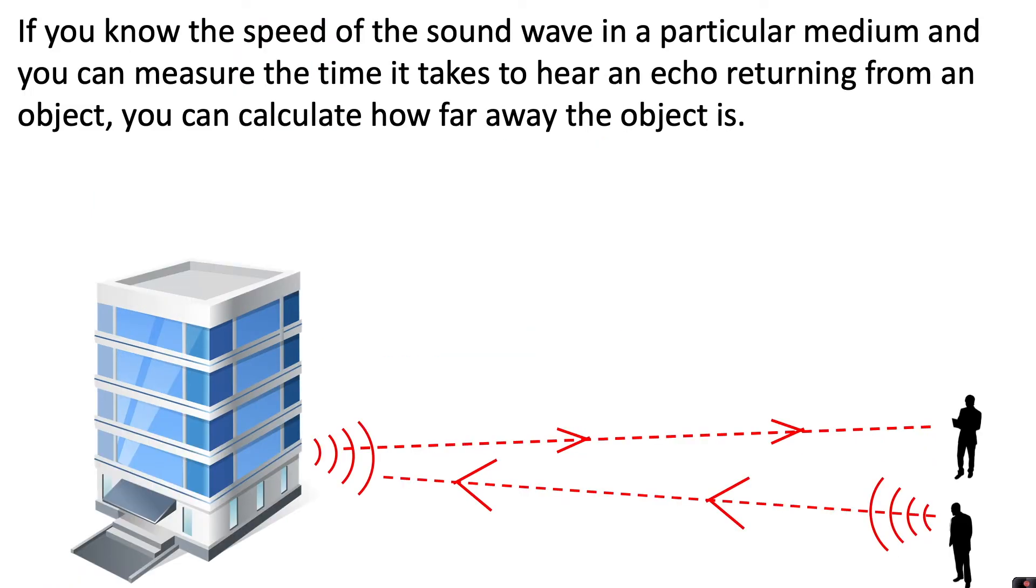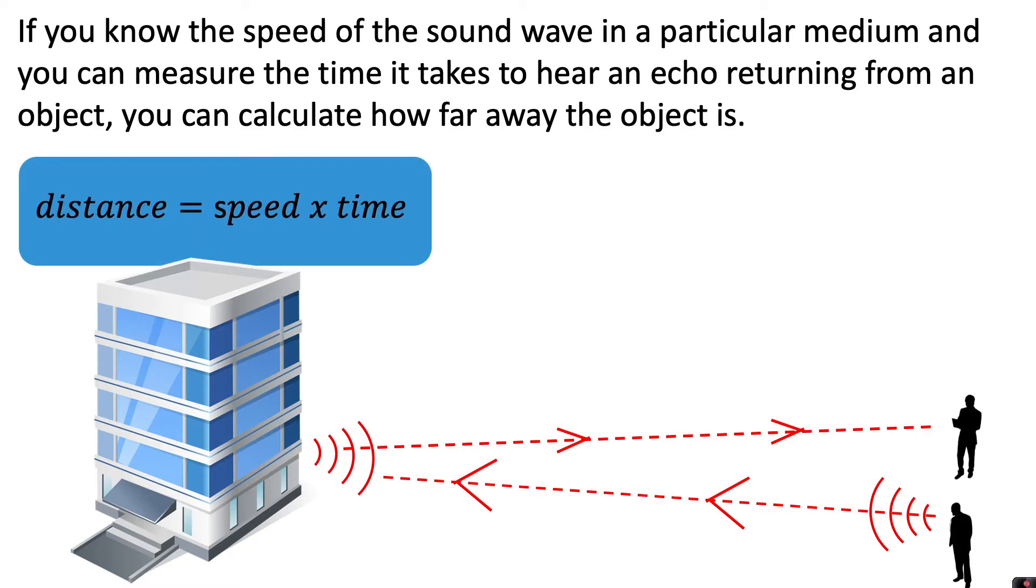If you know the speed of the sound wave in a particular medium and you can measure the time it takes to hear an echo returning from an object, you can calculate how far away the object is. You'd use the equation distance equals speed times time. Let's say we didn't know how far away the people were from the building and that's what we wanted to calculate.